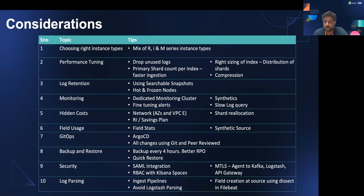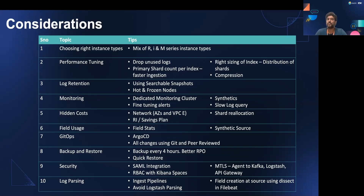With respect to the architecture, there are a few key considerations for achieving the best performance and utilization. The most critical is choosing the right instance type — a single instance type does not work for all layers in Elasticsearch. For hot nodes we use M-series, for frozen tiers we use I-series, and for Logstash and Filebeat nodes we use R-series instances. Performance tuning is key: we identified and dropped unused logs, and store one shard per node to make searches much faster. Log retention lifecycle is well-managed for each index based on business needs.